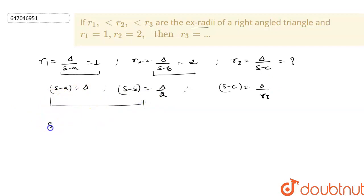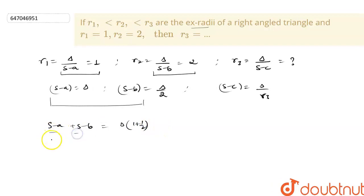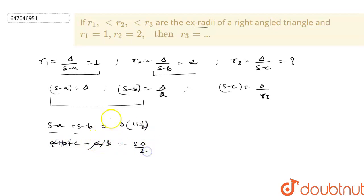So here (s-a) plus (s-b) is equal to delta plus delta by 2, that is 1 plus 1/2, so (s-a) + (s-b) gives us c, and 3 delta by 2. So when we add s-a and s-b, we get c equal to 3 delta by 2.